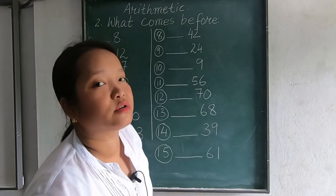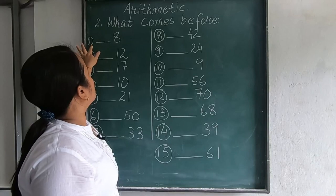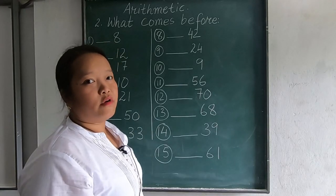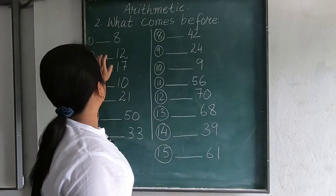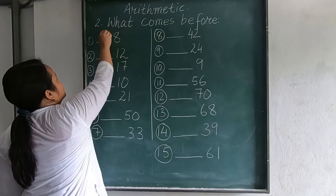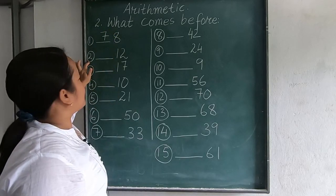So here in the first question, as we have seen, 8. Number 1, 8. What comes before 8? I hope you all know this. So before 8, there is 7.